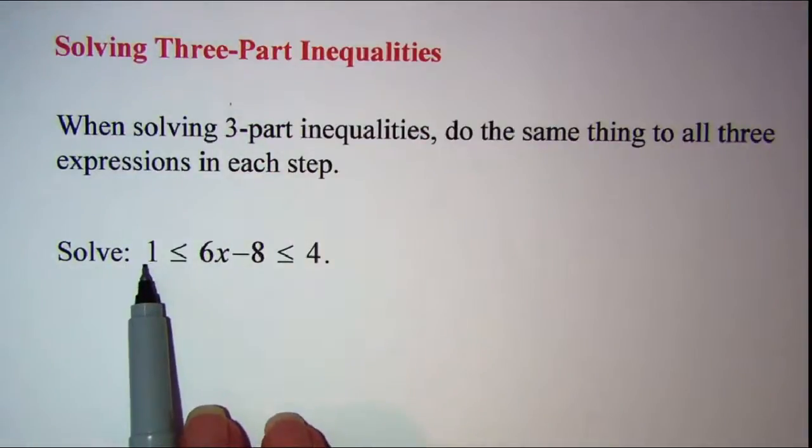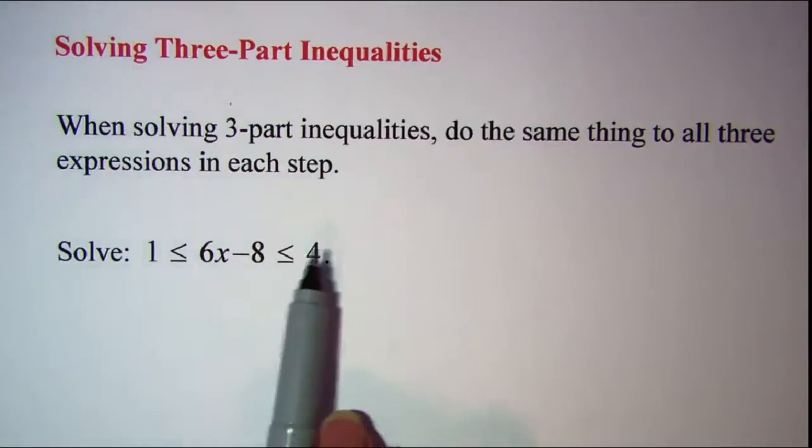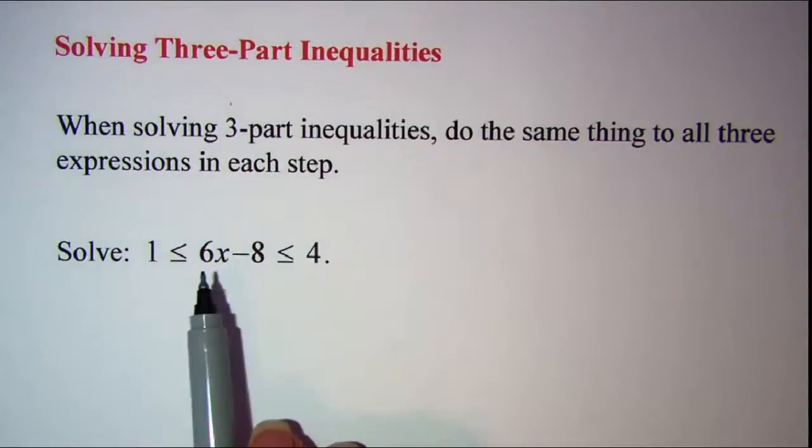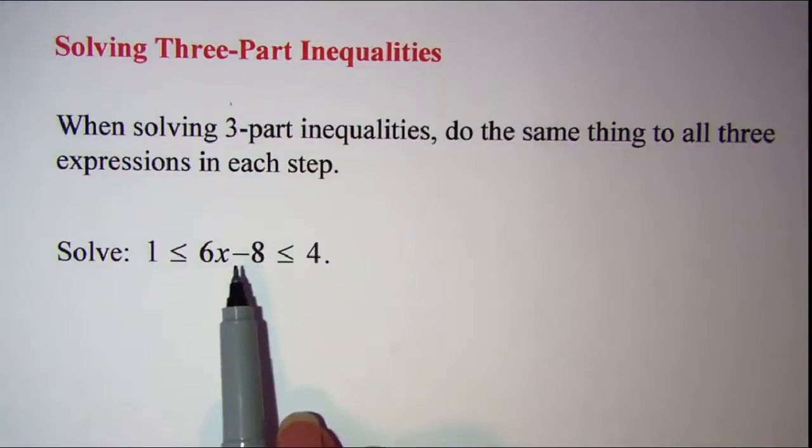Well we have three parts. We have the part here that's to the left of the inequality symbol, then we have the part that's in between the two inequality symbols, and then we have the part to the right of the inequality symbols. We need to do the same thing to all three parts. Our main objective is to isolate x in the middle part.